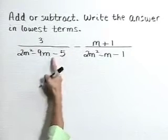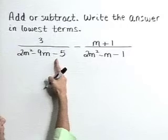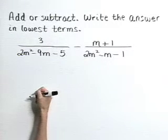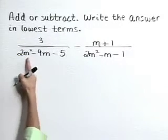In order to subtract these rational expressions, we need a common denominator. Let's begin looking for that common denominator by factoring each of these.